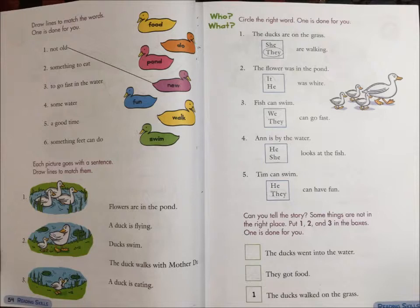3. Fish can swim. We or they can go fast. 4. Ann is by the water. He or she looks at the fish.